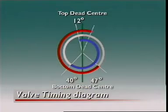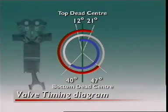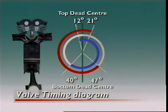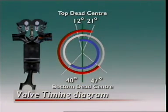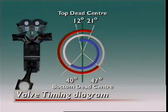The exhaust valve stays open until 21 degrees past top dead center, giving exhaust gases more time to leave. By the time the piston is at 47 degrees before bottom dead center on the power stroke, combustion pressures have dropped considerably, and little power is lost by letting the exhaust gases have more time to exit.